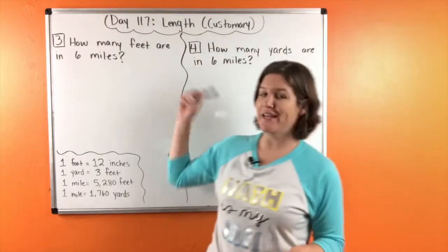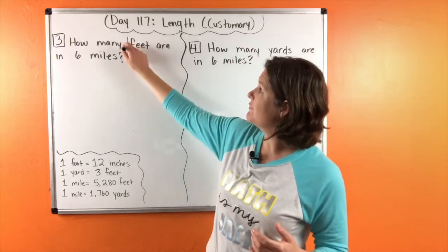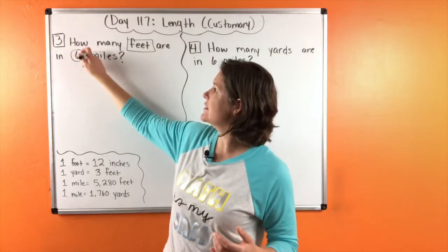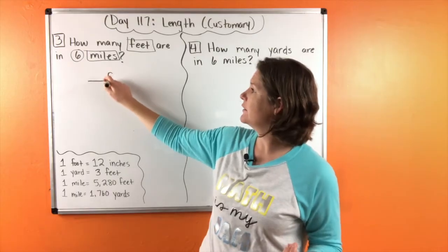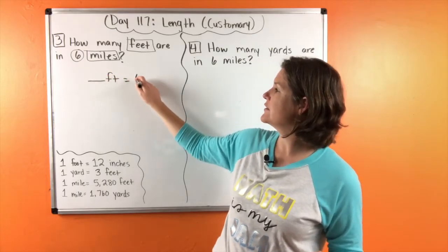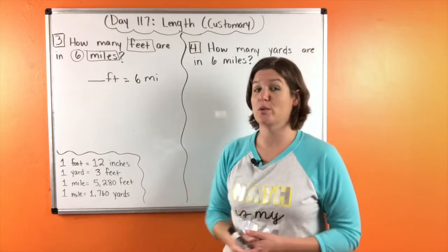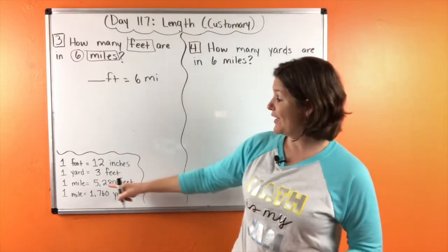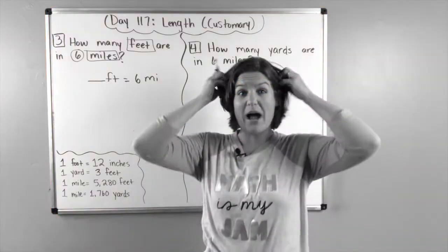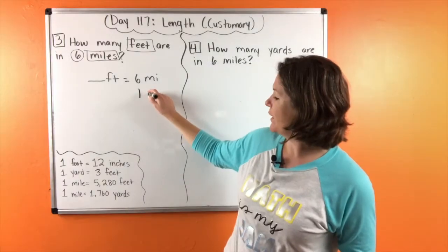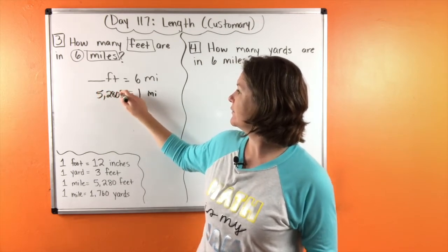All right, everybody, we're back with number three and number four. Let's go ahead and try these together. So we have how many feet are in six miles. Let's rewrite that as how many feet are in six miles. Well, what do we know about feet and miles according to our reference sheet? Yeah, we know that one mile equals 5,280 feet. Oh my gosh, that's a lot of feet. So one mile equals 5,280 feet.